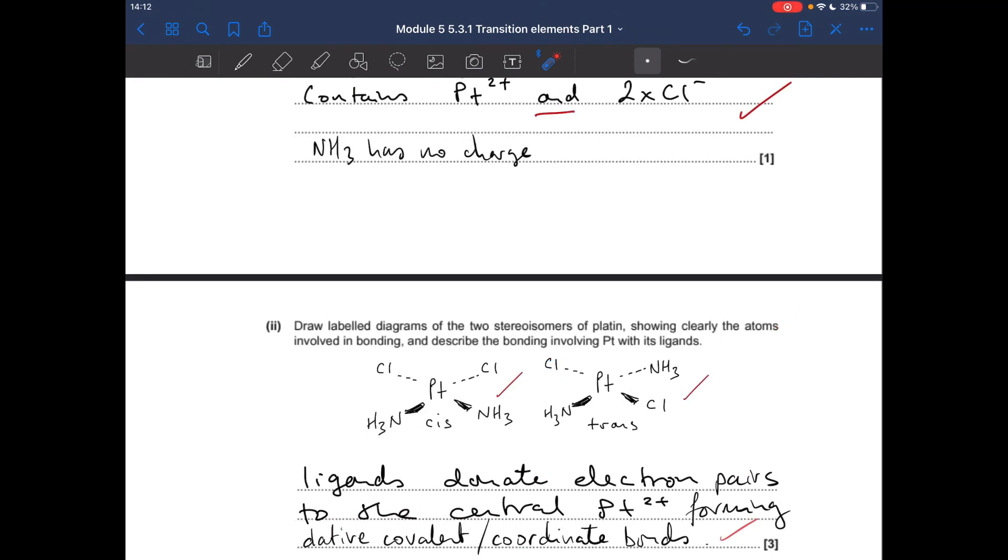Next part of the question, 2 diagrams of cis and transplatin is what they're after. So the cis isomer is where the identical ligands are 90 degrees apart. The nitrogen is what's bonded to the platinum, so just be careful you make sure that it's the nitrogen directly bonded to the Pt. The trans isomer is where the identical ligands are 180 degrees apart.